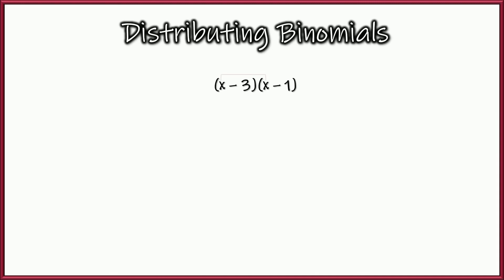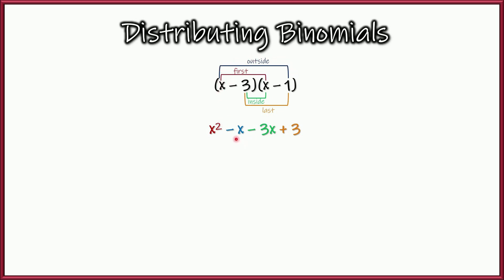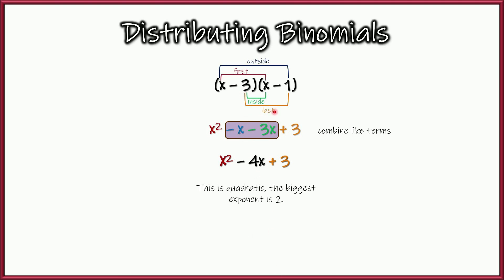To do that, let's go back to the beginning of distributing binomials. Remember the FOIL method — First, Outside, Inside, Last? So if you had x minus 3 times x minus 1 and you multiplied these together using FOIL: First gives x squared, Outside gives negative 1x, Inside gives negative 3x, and Last gives positive 3. Combining like terms, we end up with a quadratic. We took two binomials, each with an x value, multiplied them together, and got a quadratic. That's pretty cool.